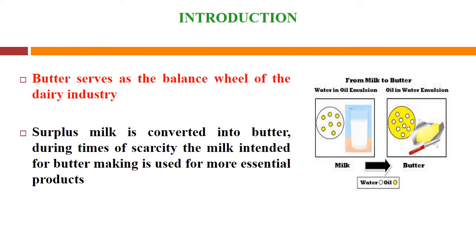Butter is a fat-rich dairy product. It is concentrated milk fat and butter serves as the balance wheel of the dairy industry. That means it plays a role of balancing. When there is a surplus milk, it is converted into butter by first separating the fat from the milk and then concentrating it into butter. But when there is a scarcity, the milk intended for butter making is used for other essential purposes.